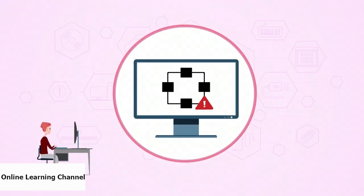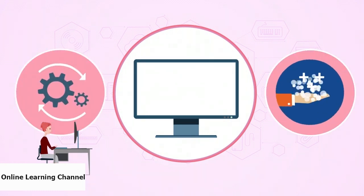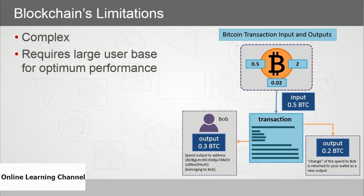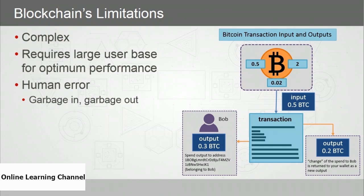Blockchain is certainly transformational, but it does come with potential drawbacks. It can be complex to implement — a whole new paradigm with a new vocabulary and a talent market that hasn't caught up with the industry. To operate most optimally, blockchain requires a large user base. And while it offers great security, it is prone to human error. Everyone understands garbage in, garbage out — if you implement a blockchain, you can't do it carelessly.